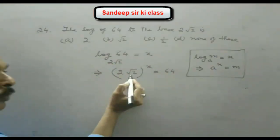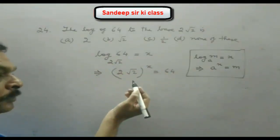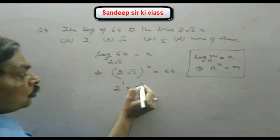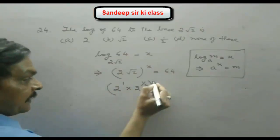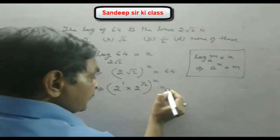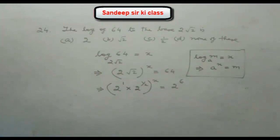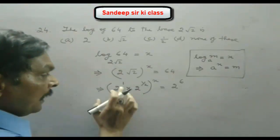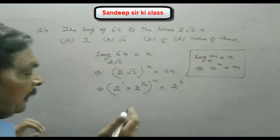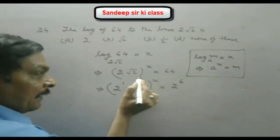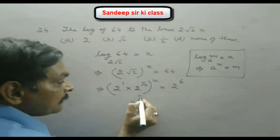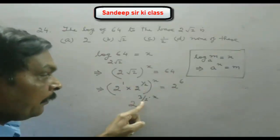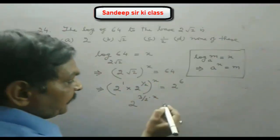Now root 2 can be written as 2 to the power 1/2, so inside the bracket we write 2 to the power 1 into 2 to the power 1/2, all raised to the power x, equal to 64, which is 2 to the power 6. Solving the bracket, 1 and 1/2 are added giving 3/2, so the left side becomes 2 raised to the power (3/2)x.